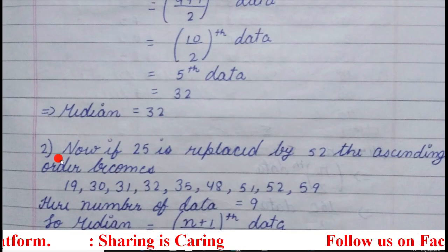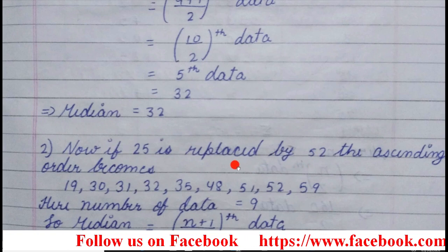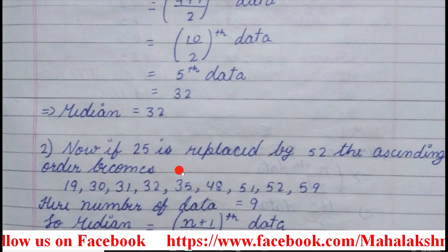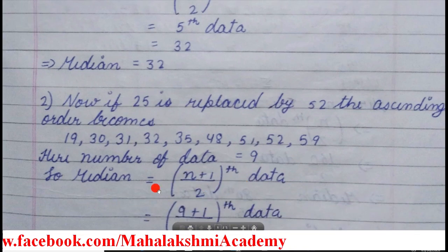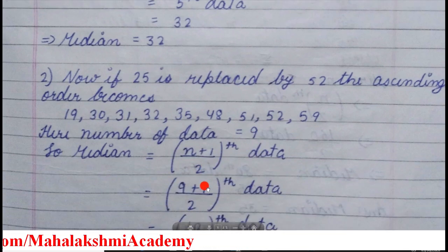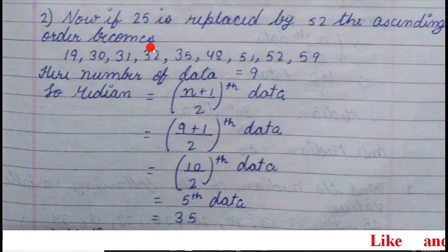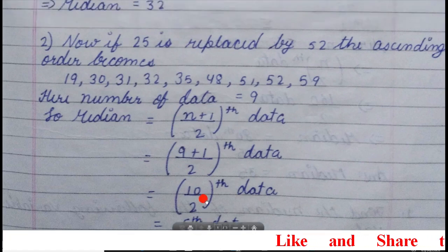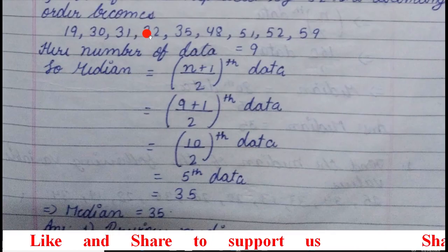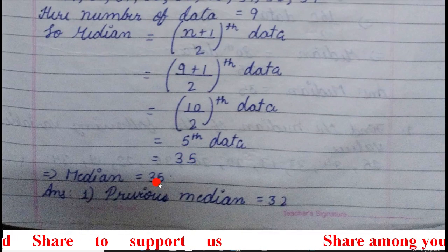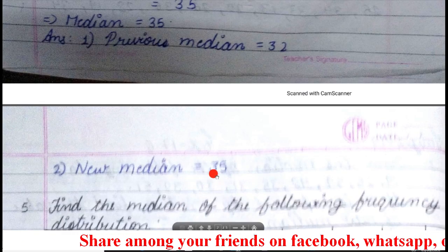Now the question asks: if 25 is replaced by 52, the ascending order will change. The new ascending order is written out. Again the data are 9, so the same odd formula applies: Median = (n+1)/2 th data. Counting the 5th data: 1, 2, 3, 4, 5 — the 5th data is 35. So before, the median obtained was 32, and now the new median is 35.